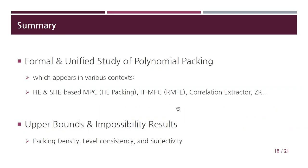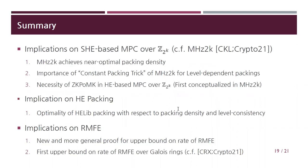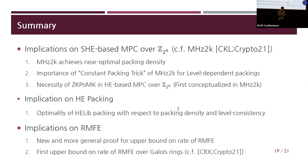Summary: we initiated the formal and unified study of polynomial packing, which appears in various contexts including homomorphic encryption, somewhat-HE-based multi-party computation, information-theoretic MPC, and zero-knowledge. We proved an upper bound on packing density and impossibility results regarding level consistency and surjectivity. Our results have implications on SPDZ-based MPC over Z/2^k — namely optimality and justifications of techniques used in MegaHz2k — and implications that Halevi packing is optimal for Z/p^k message space with level consistency, and upper bounds on rates of RMFE.